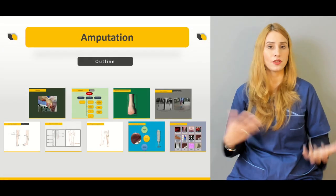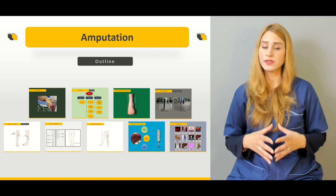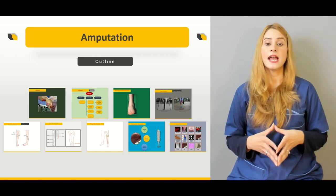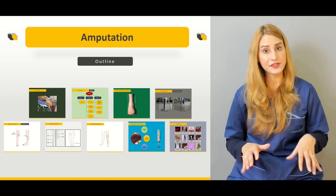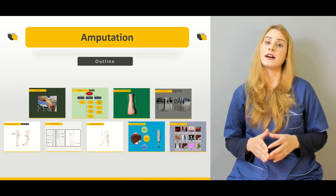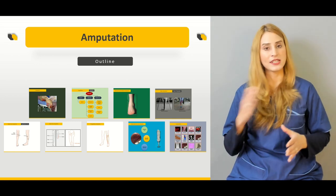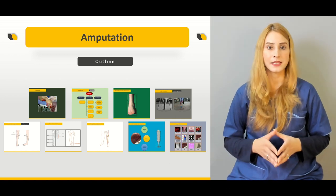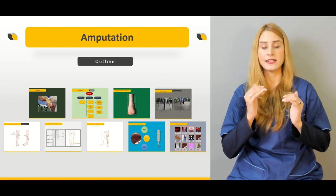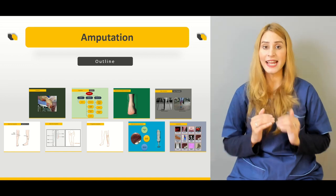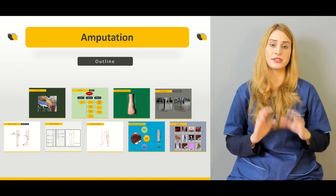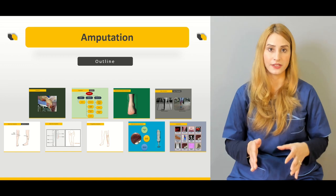More specifically, the outline of today's lecture will cover the indications for amputations — what is a deadly limb, what is a dead loss limb, what is a dead limb — and what conditions fit into each of these categories.